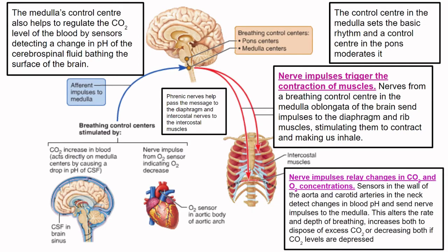There are also sensors in the wall of the aorta and the carotid arteries that detect changes in carbon dioxide concentration and therefore pH. This links back to the cardiovascular system and how the heart beats, which I've covered in a previous video.